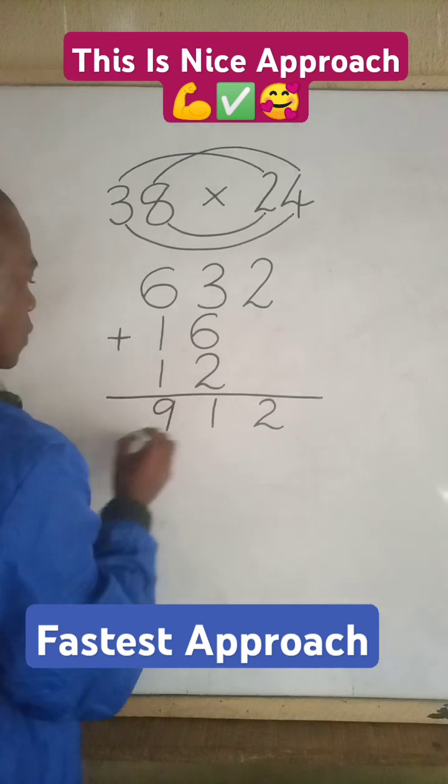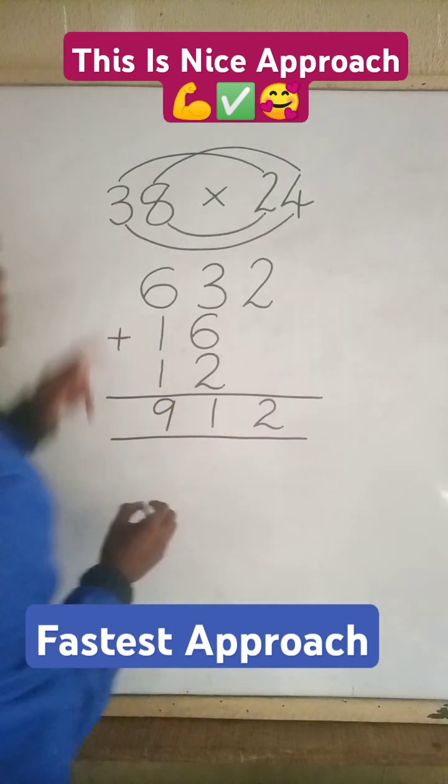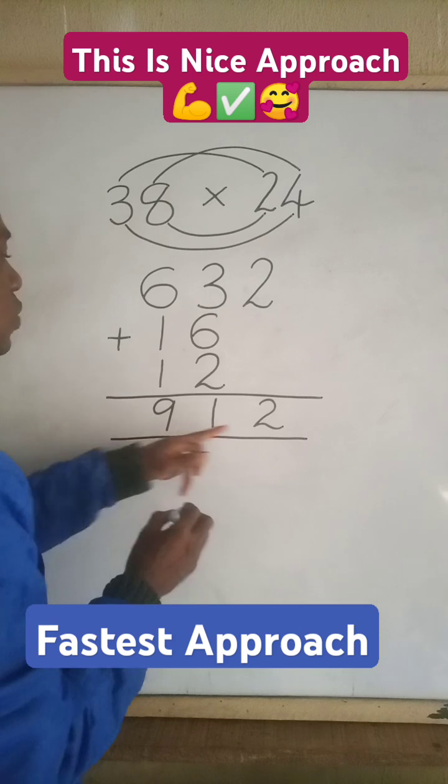So what it means is that 38 times 24 will give us 912.